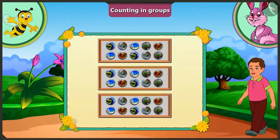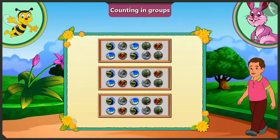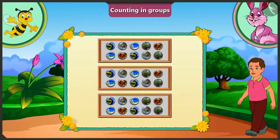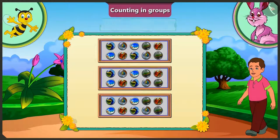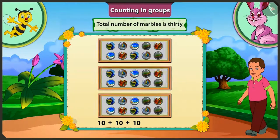Come on honey, now you tell me how many marbles are there in each box? There are five and five — ten marbles in each box. Now try to guess, how many marbles are there in total? Each box has ten marbles, and if there are three such boxes, the total number of marbles is thirty.